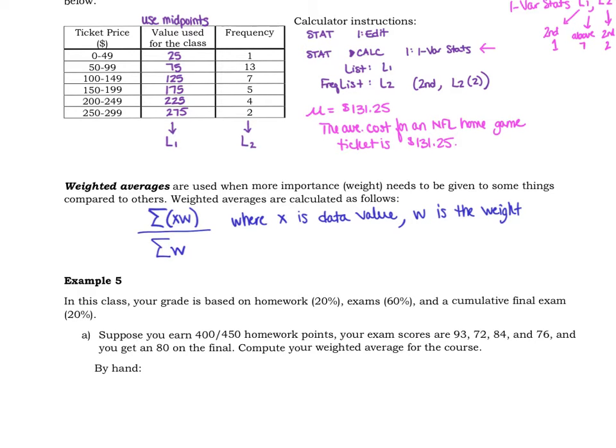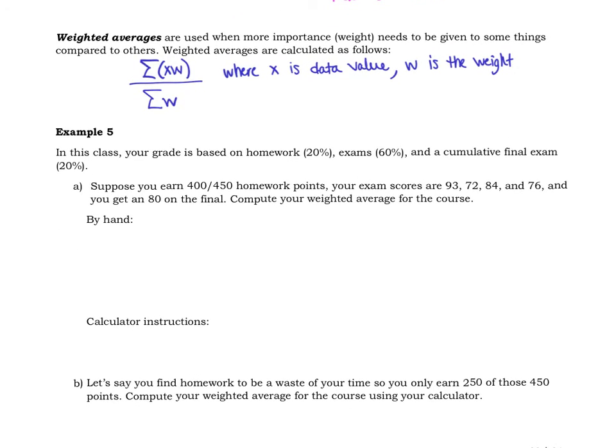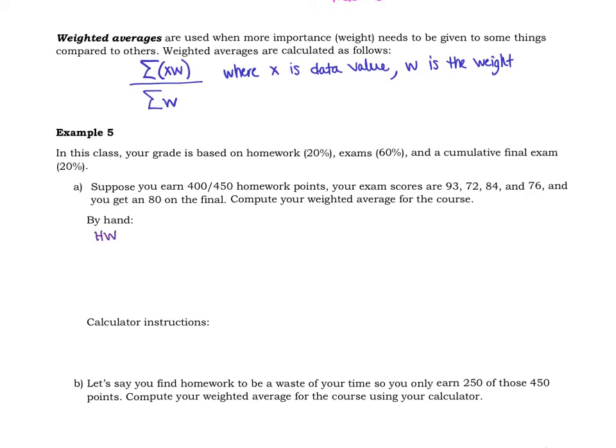x is the data value, w is the weight. So why would this be important? Well this is actually how your grade in this particular class is calculated. It is calculated using some weighting. Tests are worth more than homework, for example, and so I always have students say but I don't understand, well this is why. Tests are weighted more than homework. So let me show you real quick again how to do this by hand and then I'll show you how you can do it as well on your calculator. So in a particular class, let's see we've got a grade based on homework and exams and a final. So let's talk about x, the data values. The data values are your scores. So you earned 400 out of 450 homework points. If you divide that out, 400 divided by 450, you find out that that is 88.9 percent of your homework, that's what your average is on homework.